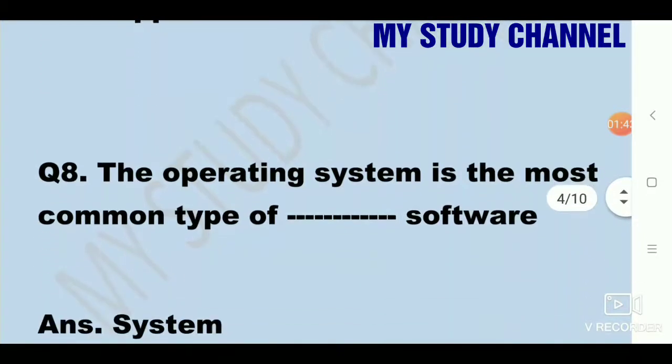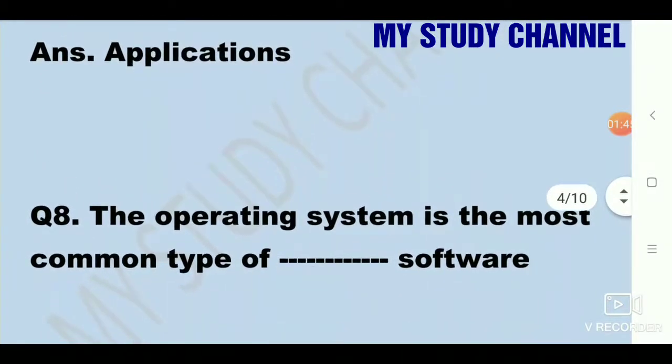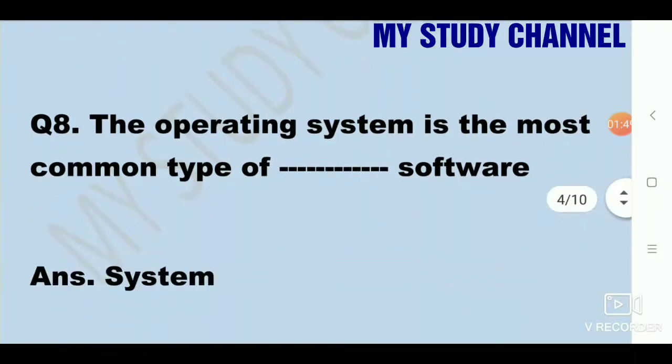Next question, the operating system is the most common type of dash software. Answer is system. The operating system is the most common type of system software.